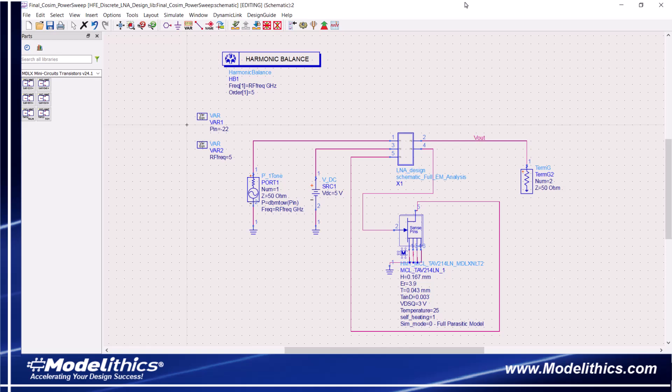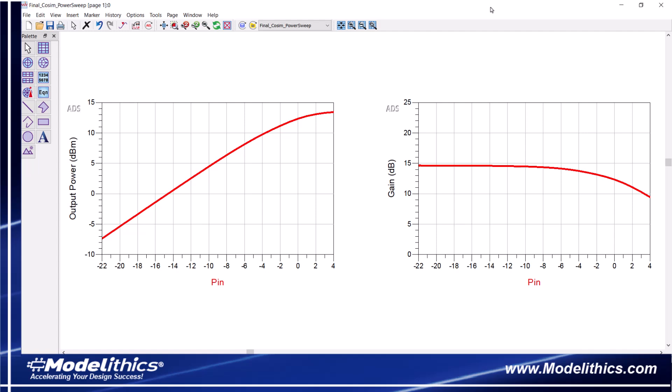Let's perform a power sweep analysis at 5 GHz. To do this, we'll perform a harmonic balance simulation. Shown on the left here is the simulated output power versus input power. On the right, we have the simulated gain versus input power. These symbols represent measured data of one LNA. So we see how the model allows us to perform accurate swept power simulations.